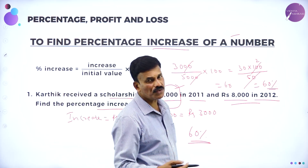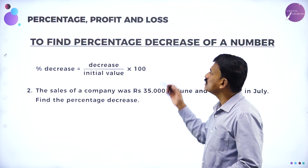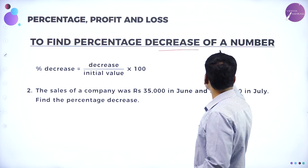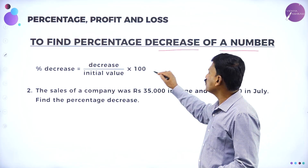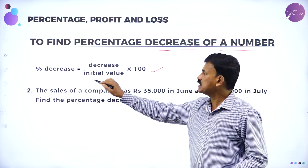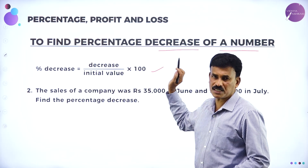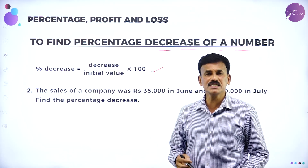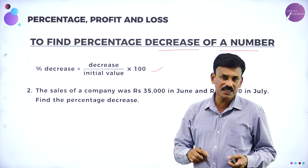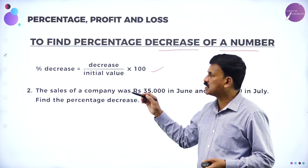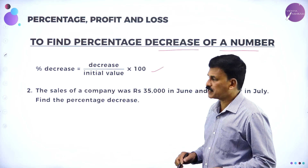Now, suppose you want to find the percentage decrease of a number. To find the percentage decrease, we are going to use the formula: percentage decrease is equal to decrease divided by initial value into 100.